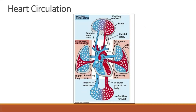The arteries carry the oxygenated blood to capillary beds in the body tissues. At the capillary beds in the body tissues, gas exchange occurs. Oxygen from the blood diffuses into the body tissues and carbon dioxide from the body tissues diffuses into the blood. Now the blood has low oxygen saturation and it is called deoxygenated blood.